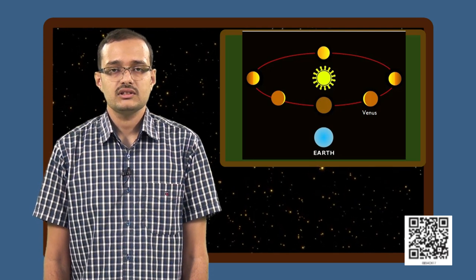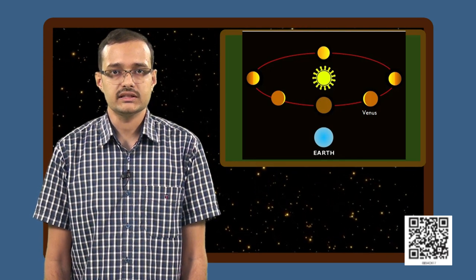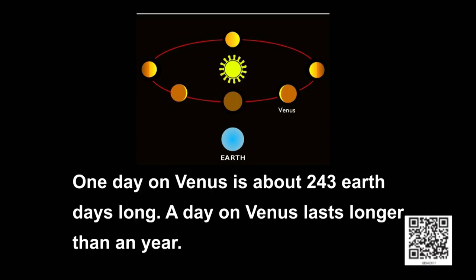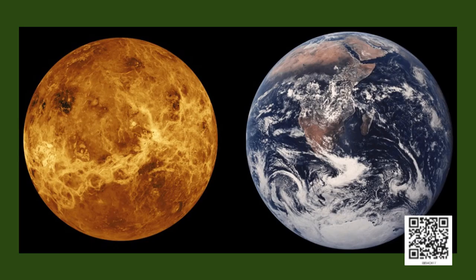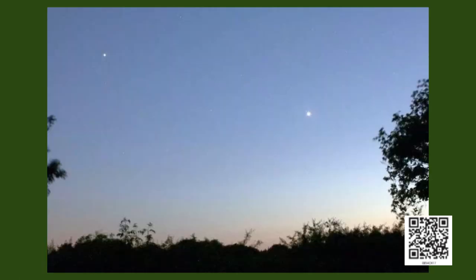Interestingly, Venus rotates about its axis in a very slow fashion. One day on Venus lasts about 243 days on earth, which means a day on Venus is longer than one year on Venus. Venus is nearly as large as the earth itself. Venus, just like Mercury, is visible only for a short duration just before sunrise or just after sunset. However, unlike Mercury, it is very easy to spot Venus because of its brightness.